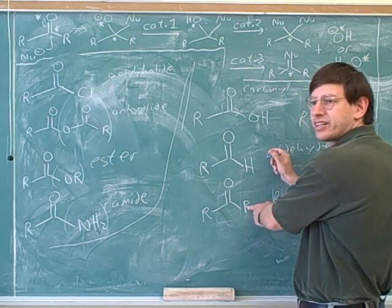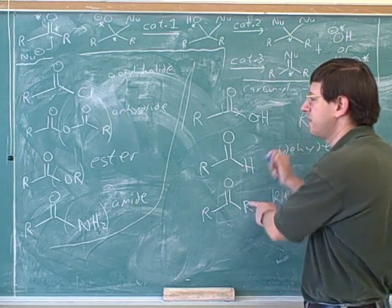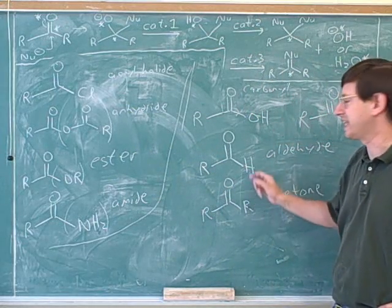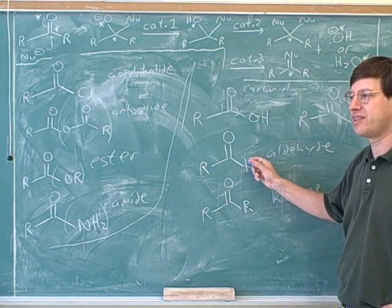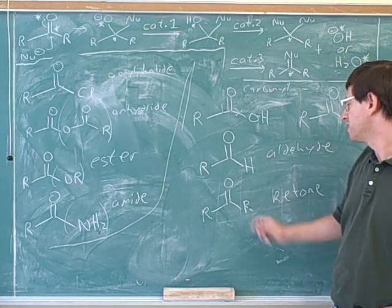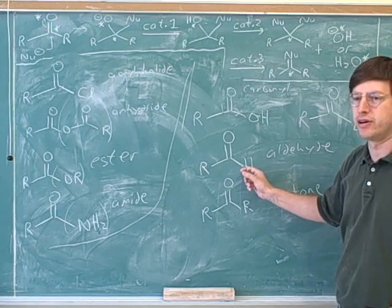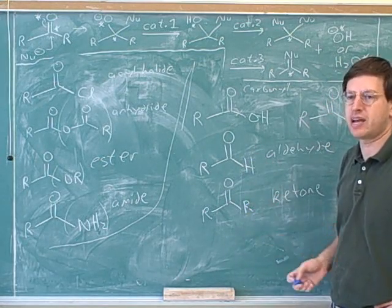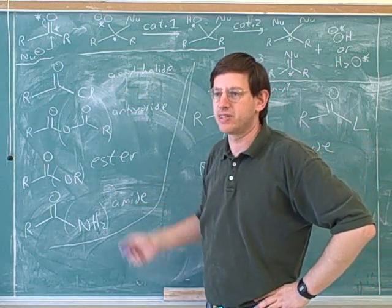Now these are not carboxylic acid derivatives, even though they kind of look like this, because these are not considered L groups—they can't leave. Not only are they bad leaving groups, they are unacceptable leaving groups under any conditions. They're their own separate category. That's why you had one separate chapter for aldehydes and ketones and now a separate chapter for carboxylic acid derivatives.